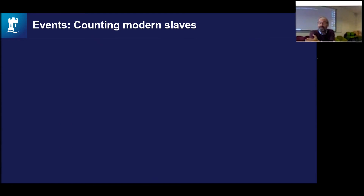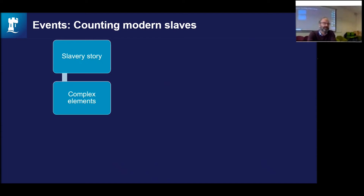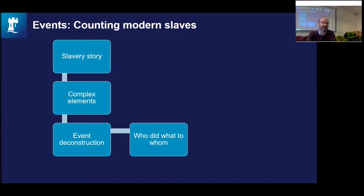The first measurement approach is events-based data — how do we count modern slaves? This is a big question in the policy community: how many are there, is the number going up or down, and what can we do to reduce that number? Events-based data starts with slavery stories — people giving narrative accounts of what happened to them or a loved one. From that you extract complex elements, deconstructing the event into its constituent parts. The Human Rights Data Analysis Group in San Francisco developed the 'who did what to whom' model — the perpetrator, the violation, and the victim.